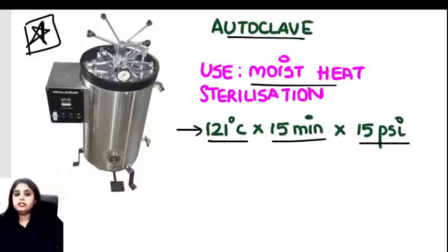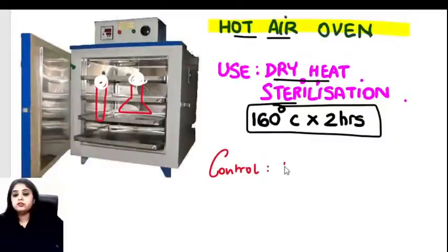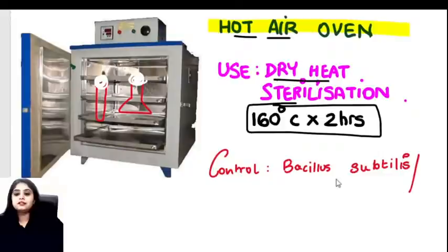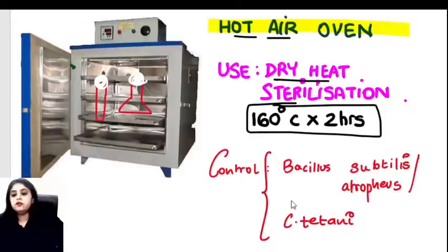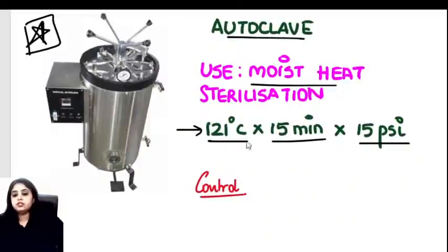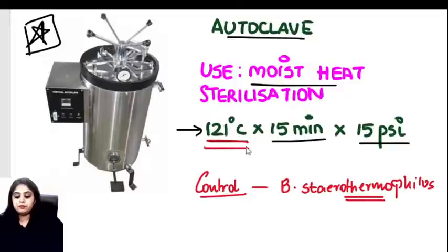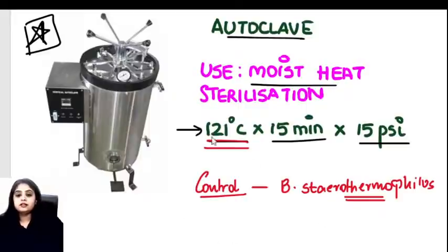Controls for sterilization: for the hot air oven the controls are Bacillus subtilis and Bacillus atrophaeus (or Clostridium tetani). For the autoclave, we need a high-temperature-tolerant control — that is Bacillus stearothermophilus. Note: cat gut is NOT sterilized in the autoclave because high temperature causes it to lose its tensile strength.